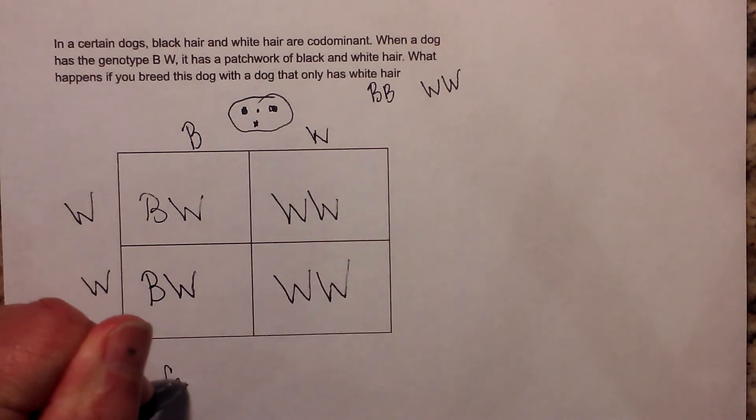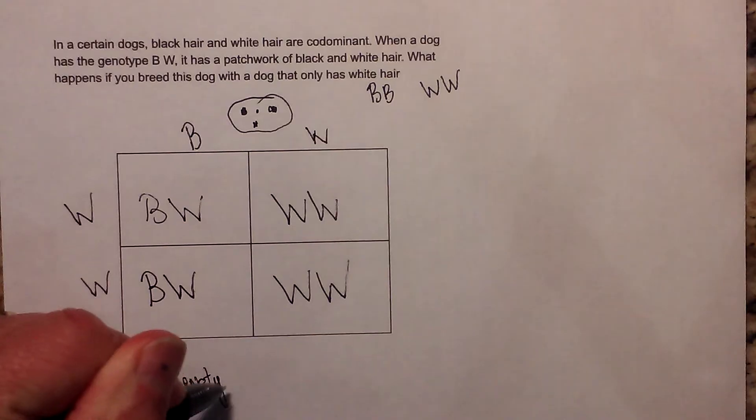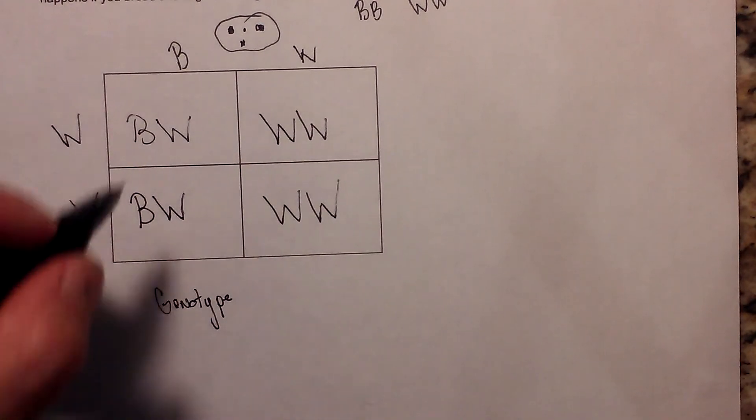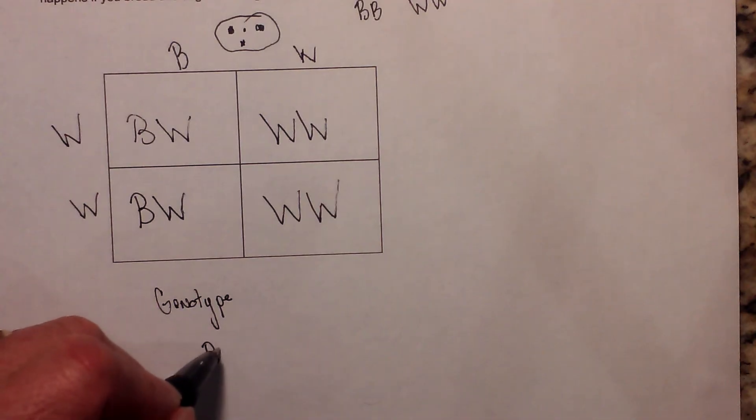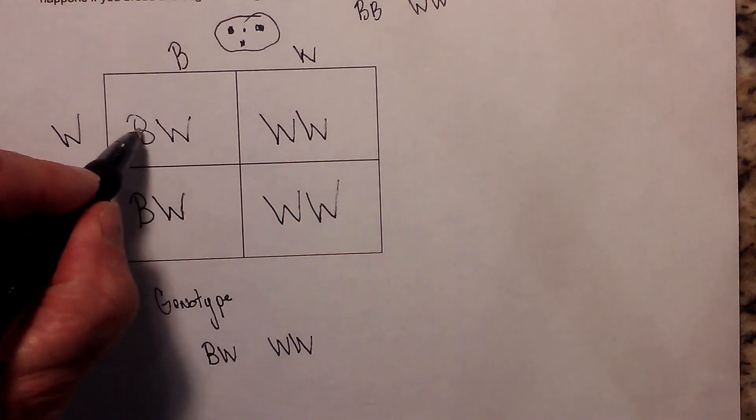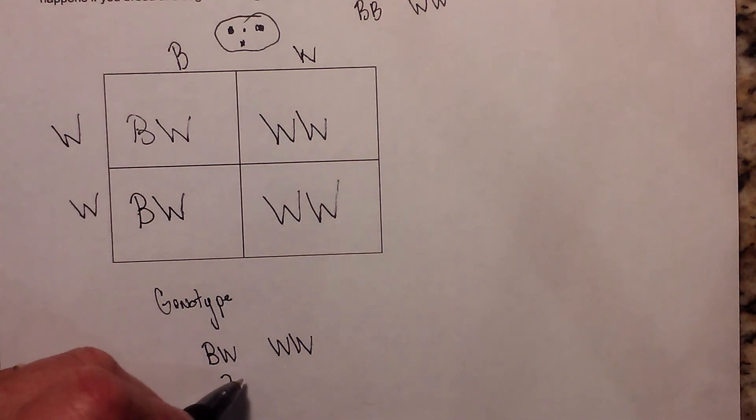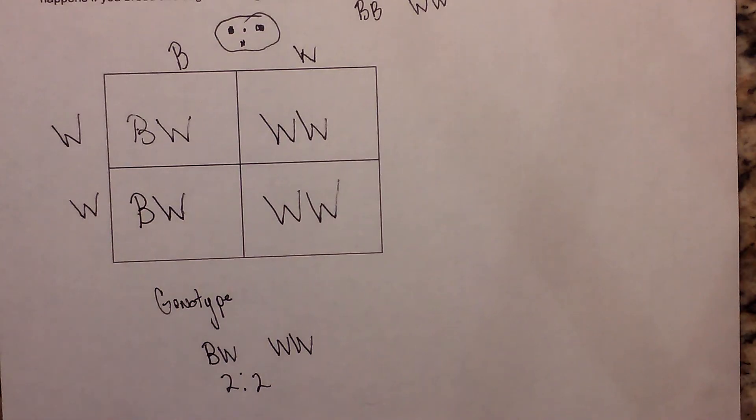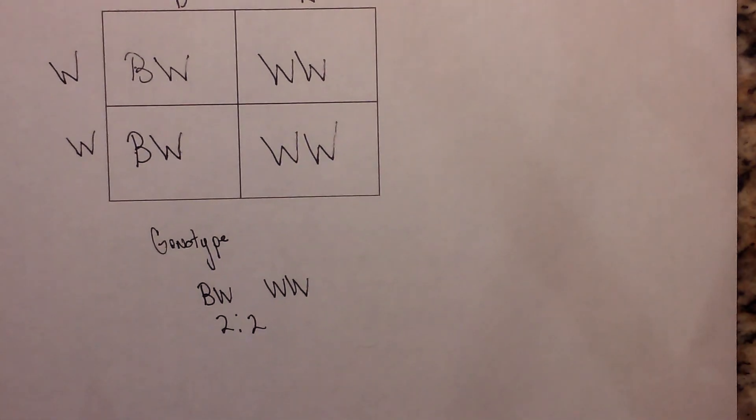So now let's look at the genotypes first. We have BW and WW. For BW we have two, and for WW we have two. And then for the phenotype, what kind of offspring are they going to have?